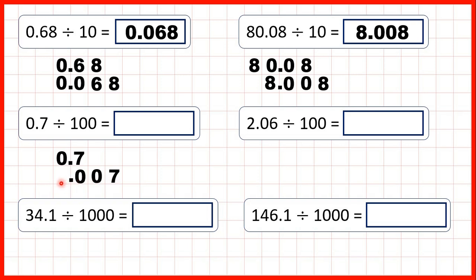We also need to write a zero before the decimal point because we can't have an empty ones column, so that gives us 0.007 as our answer.